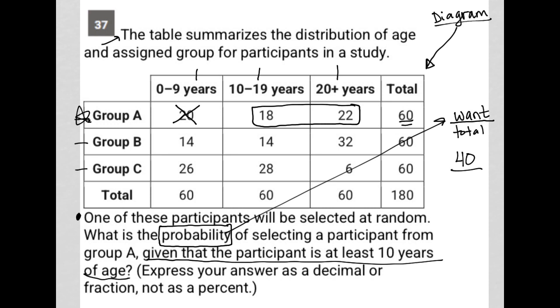Now, how about my total? Well, my total number of participants was 180. But again, given that the participant is at least 10 years old means I'm not counting any of the participants from any group that are under 10 years old. So I'm not counting a total of 60 participants, which means the total that I'm choosing from, since I'm no longer even considering those participants who are 0 to 9 years old, would be 180 minus the 60 participants who are between 0 and 9 years old. And therefore, that total would be 120.